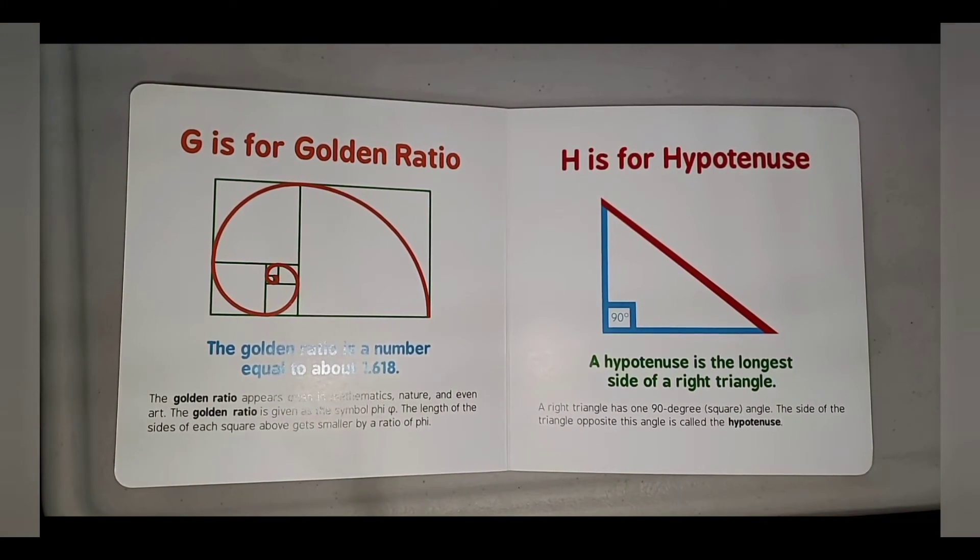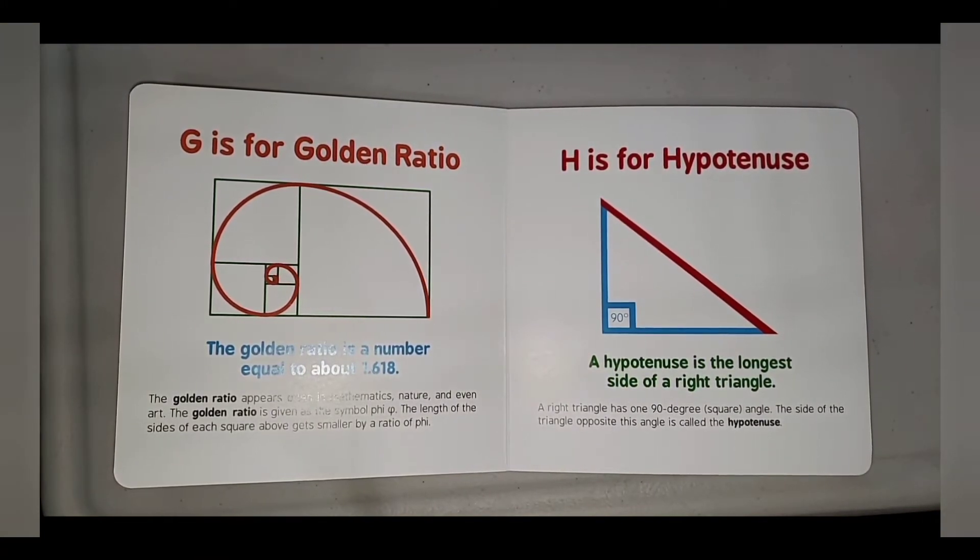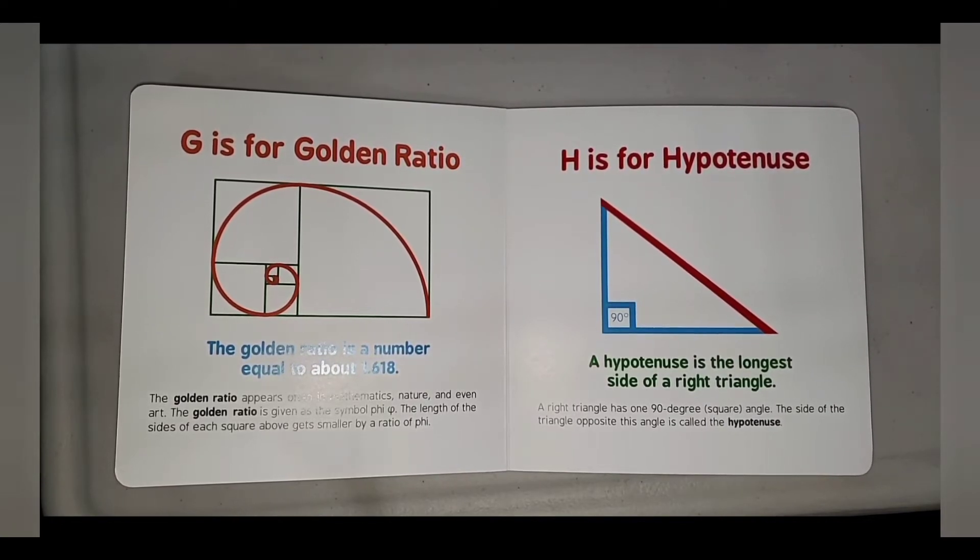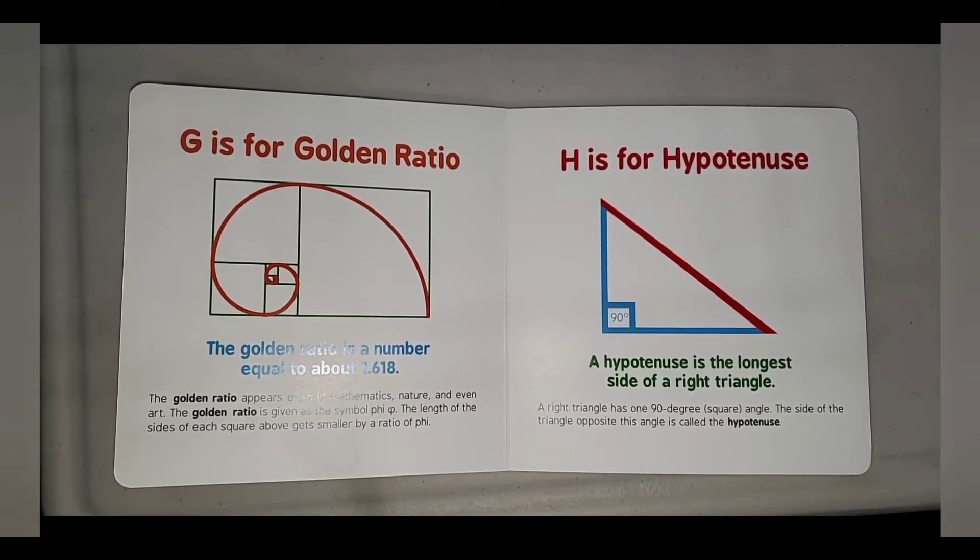G is for Golden Ratio. The Golden Ratio is a number equal to about 1.618. The Golden Ratio appears often in mathematics, nature, and even art. The Golden Ratio is given the symbol of Phi. The length of the sides of each square above fits smaller by a ratio of Phi.